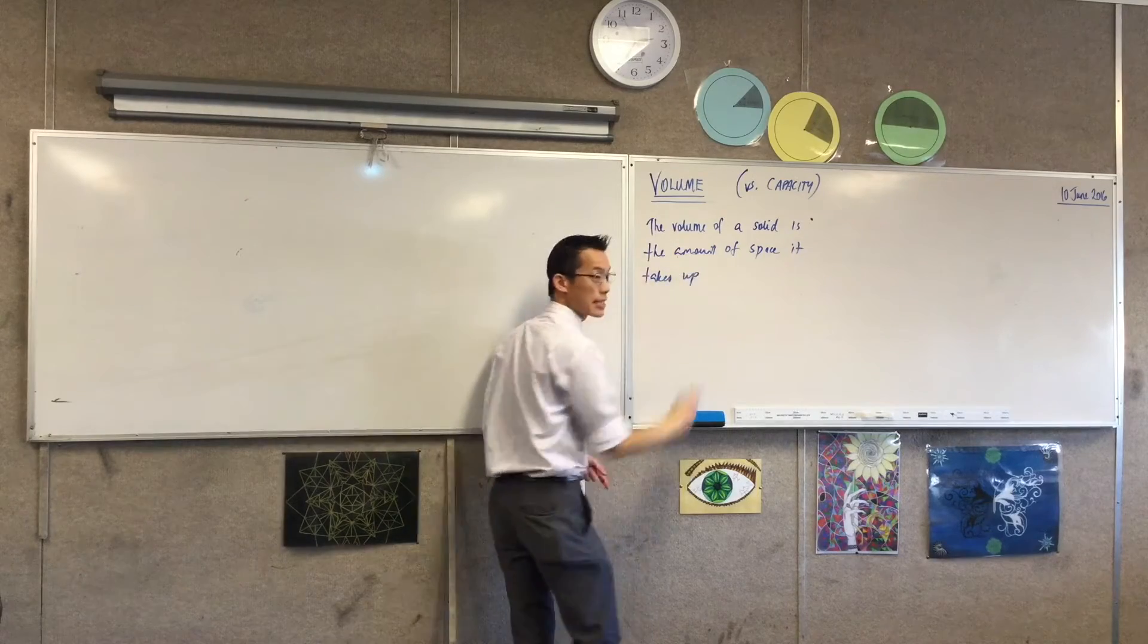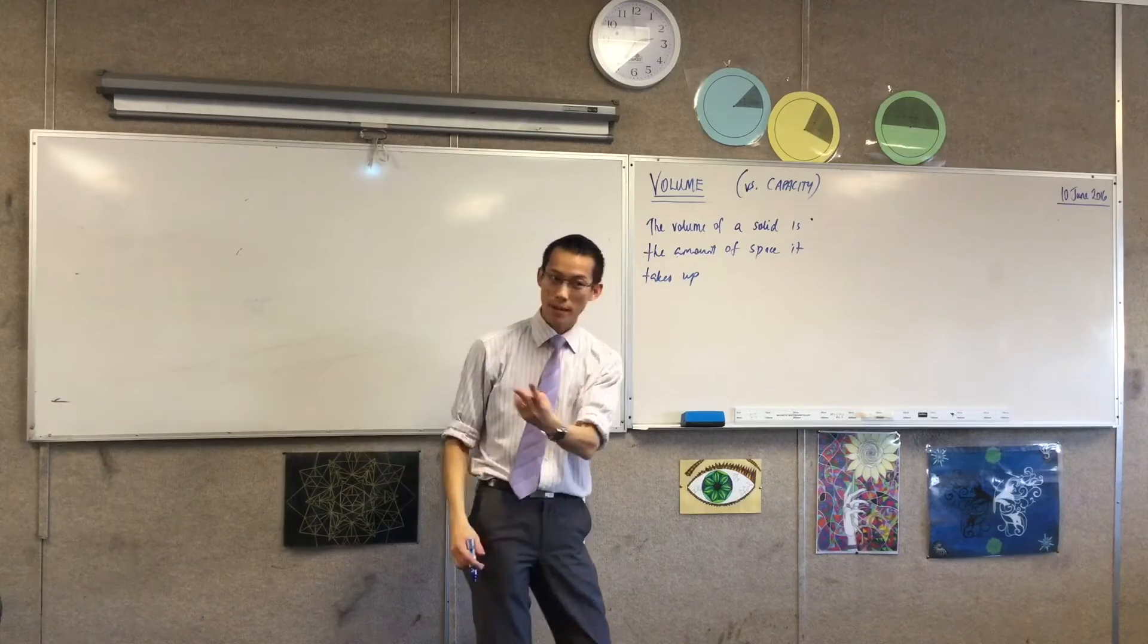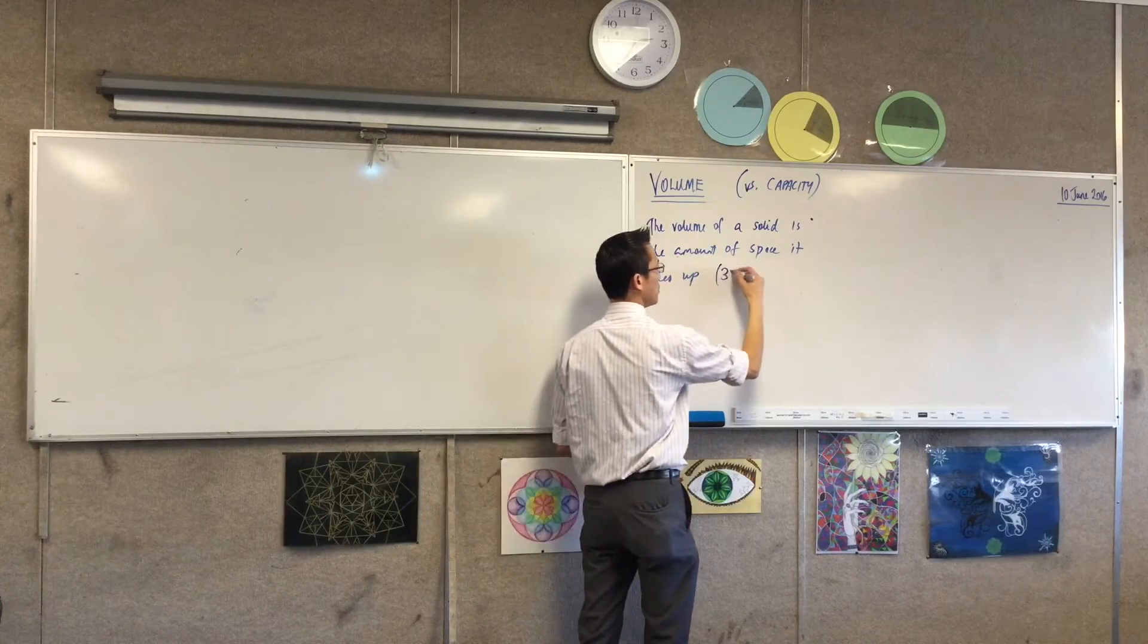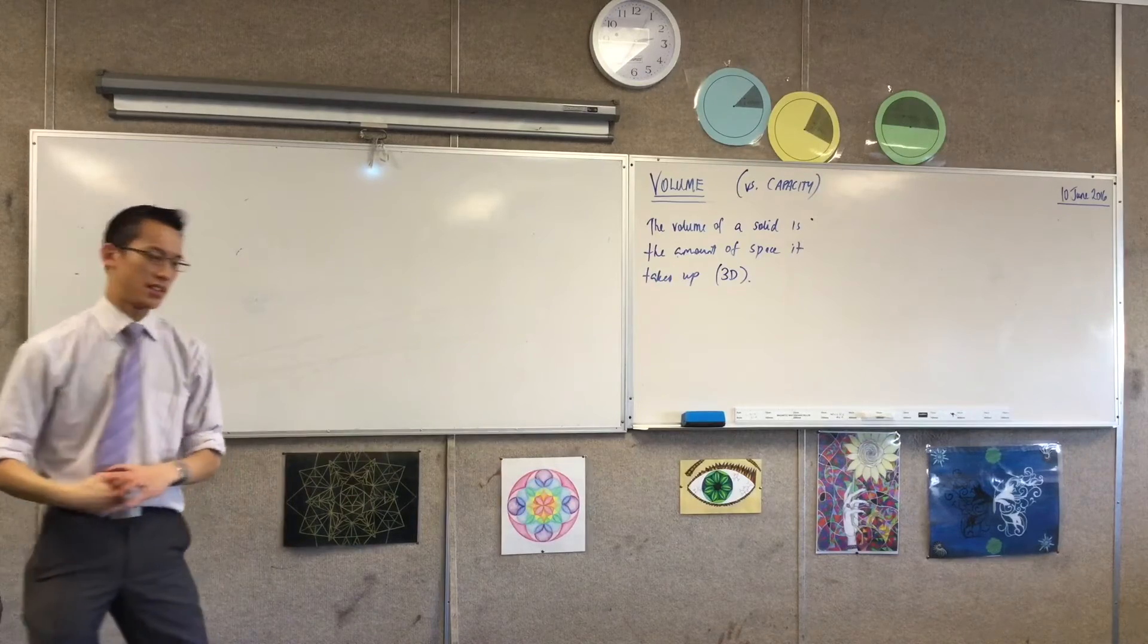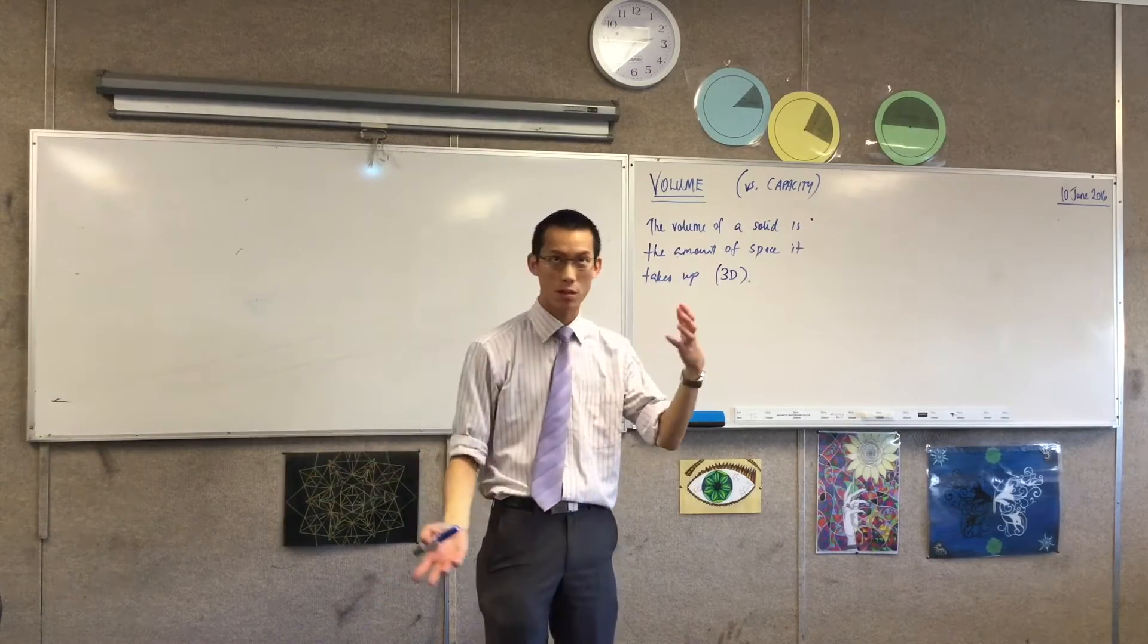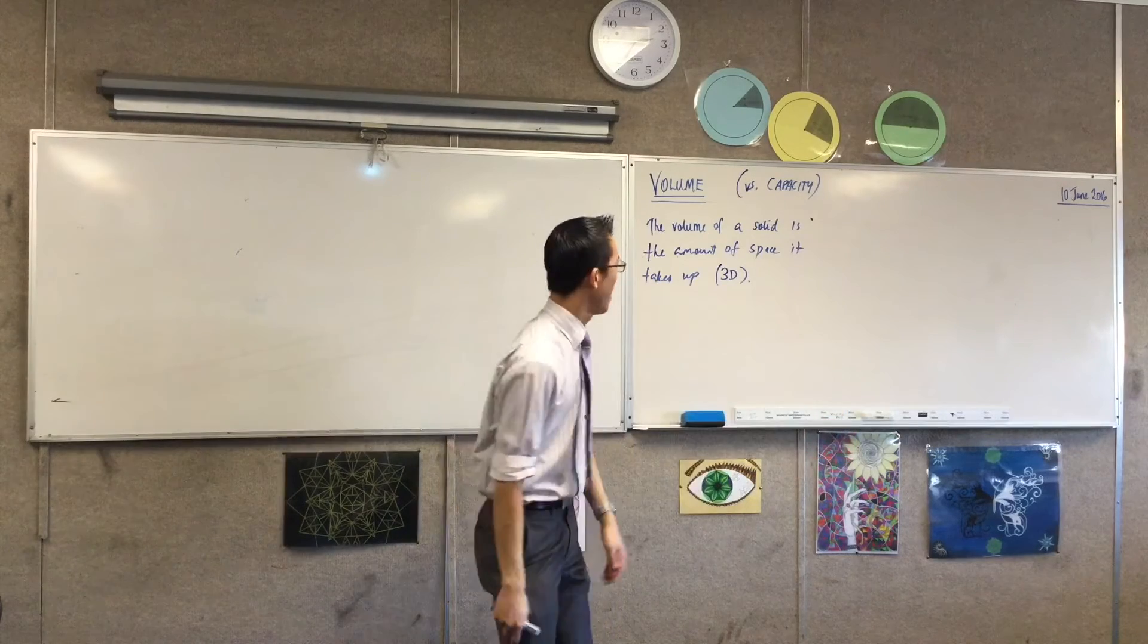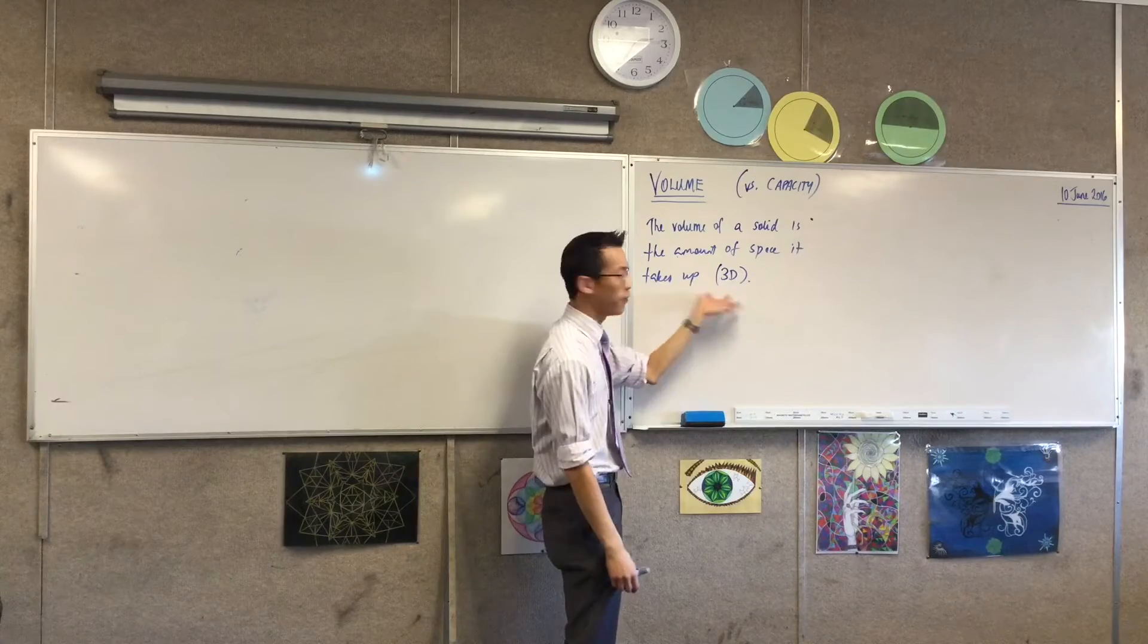And the important thing is length, one dimensional, area, two dimensional, but volume is three dimensional, okay? Which is why we have centimeters and meters for length, we have square centimeters and square meters for area, and then we have cubic meters and cubic centimeters for volume, okay?